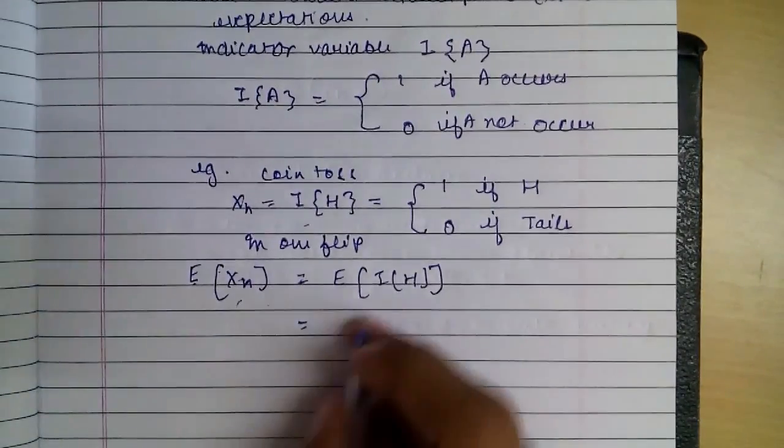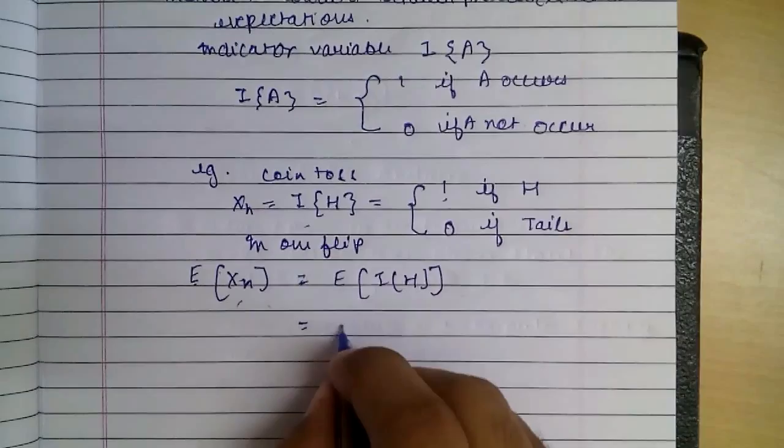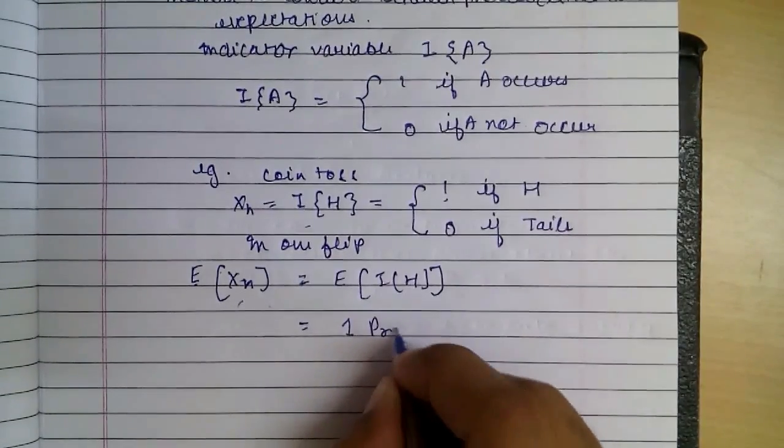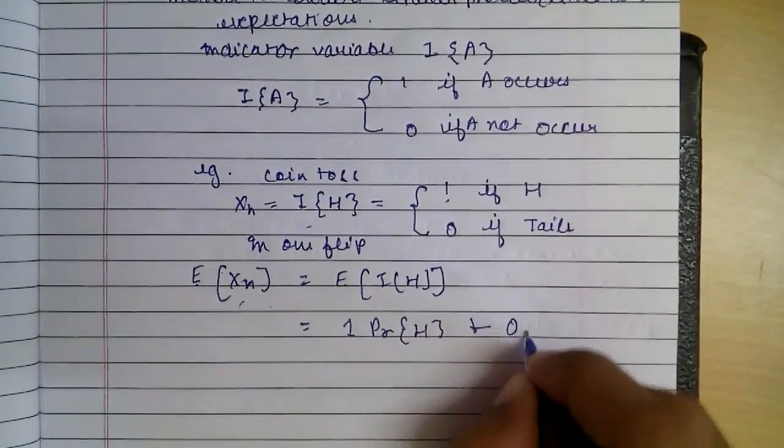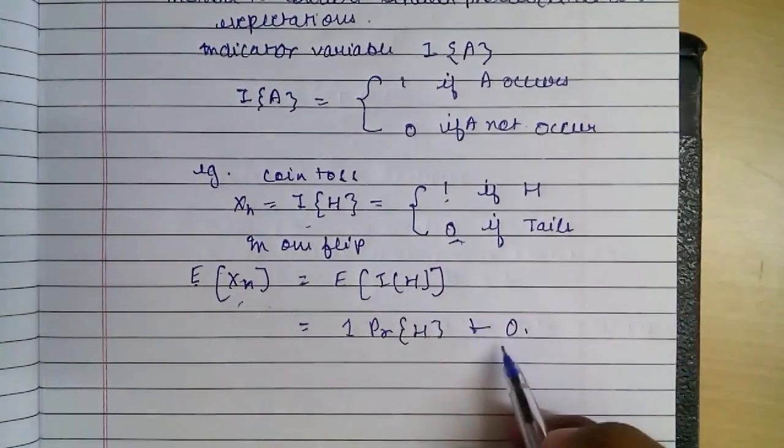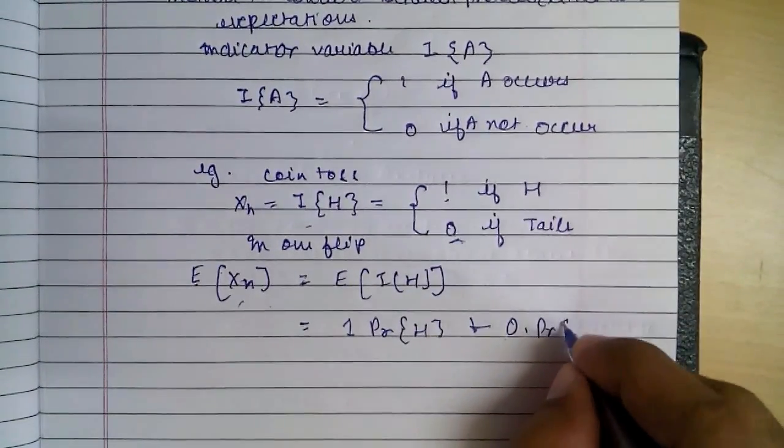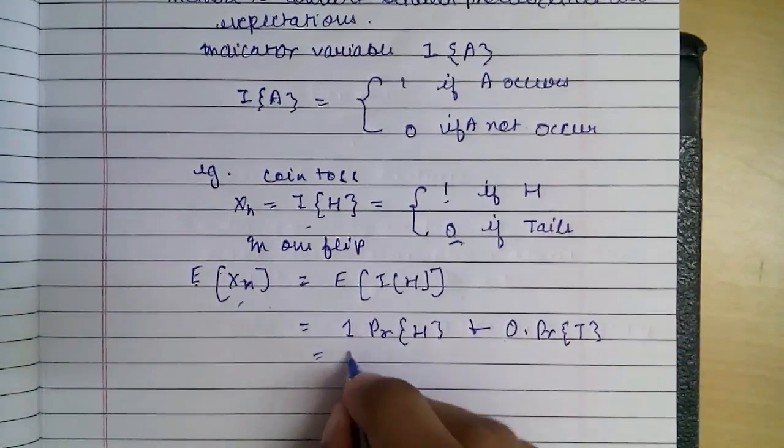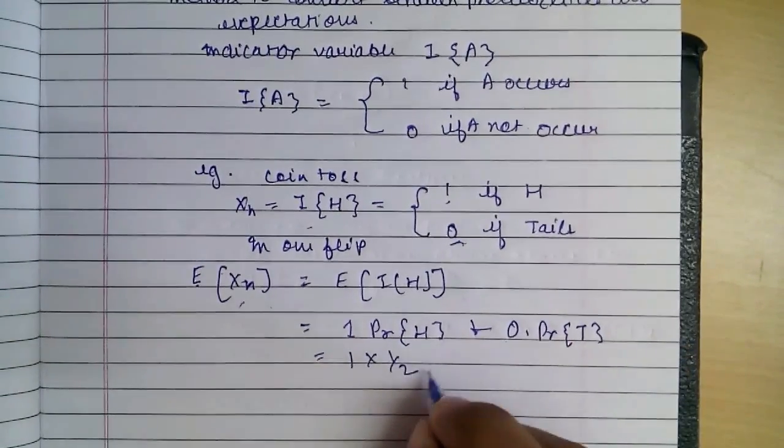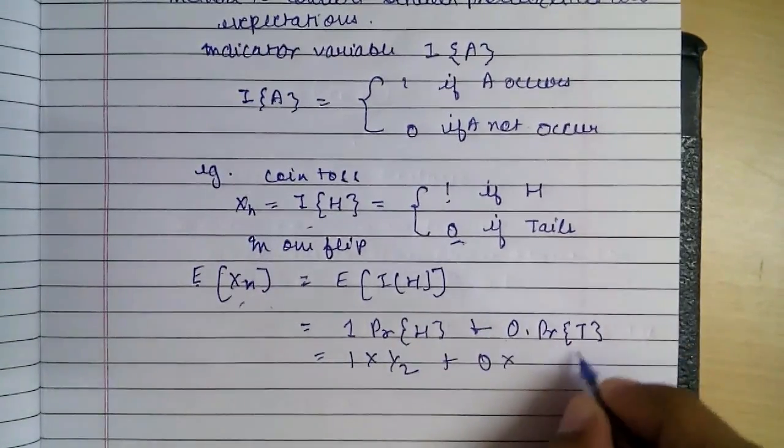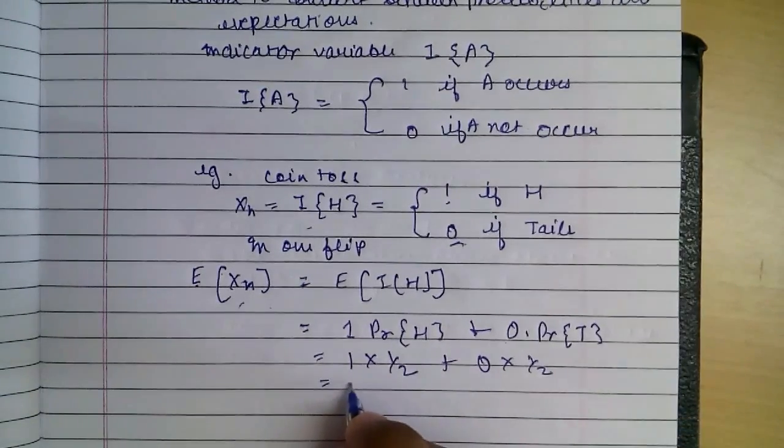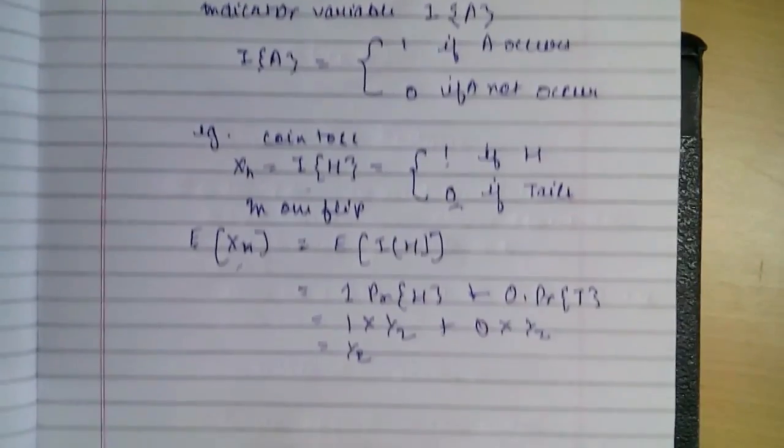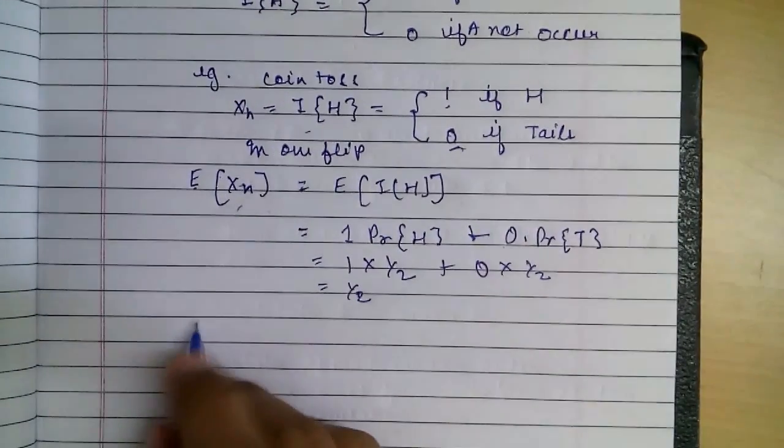1 into Probability of Head plus 0 into Probability of Tail. 1 into 1 by 2 plus 0 into Probability of Tail is also 1 by 2.